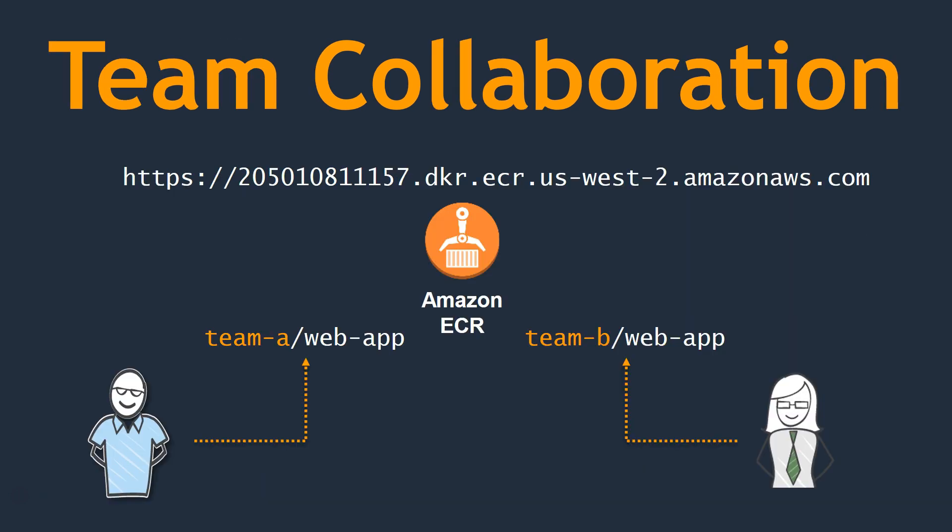Looking at team collaboration in a bit more detail: you create an ECR registry and say two teams are each having their own web apps. Instead of having an overlap, you create two registries — Team A will have its own registry with a web app under it, and Team B will have their own registry with their own web app. All of them are completely isolated so that each team's workflows are independent and not overlapping the other team's operations.